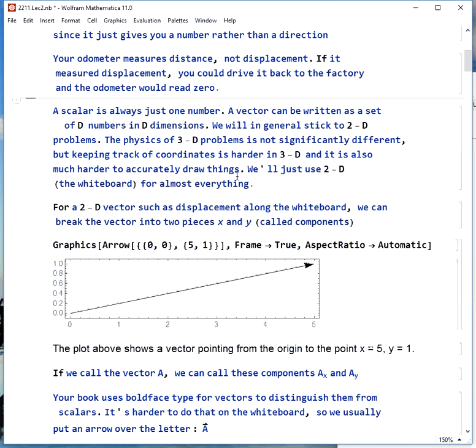A scalar is always just one number. A vector can be written as a set. It'll take d numbers in d dimensions to describe a vector. We're generally going to stick to 2D problems rather than 3D because the physics isn't much different, but the geometry is significantly harder, and we're going to use the whiteboard for practically everything, so 2D is really the best choice.